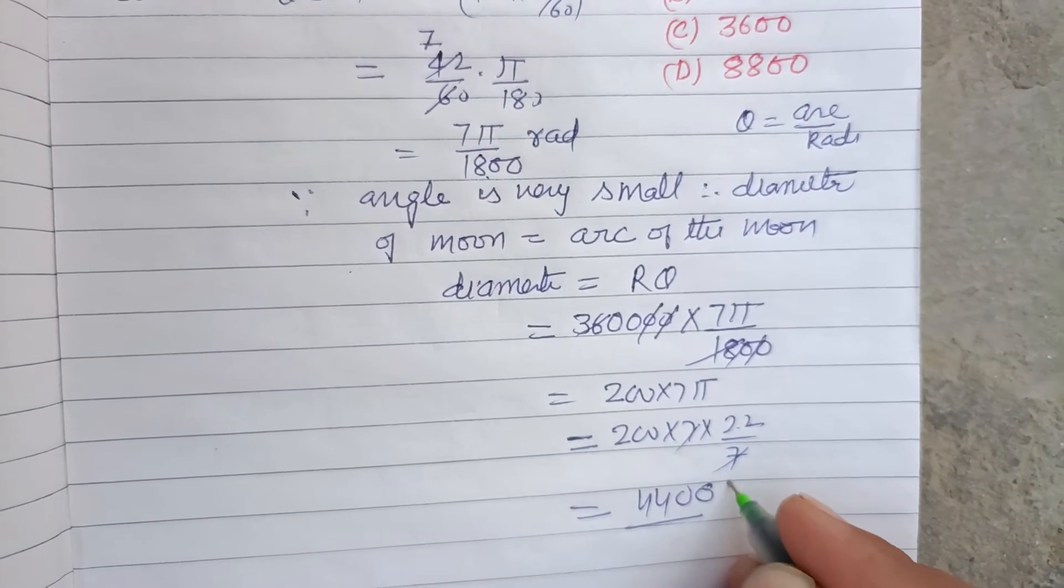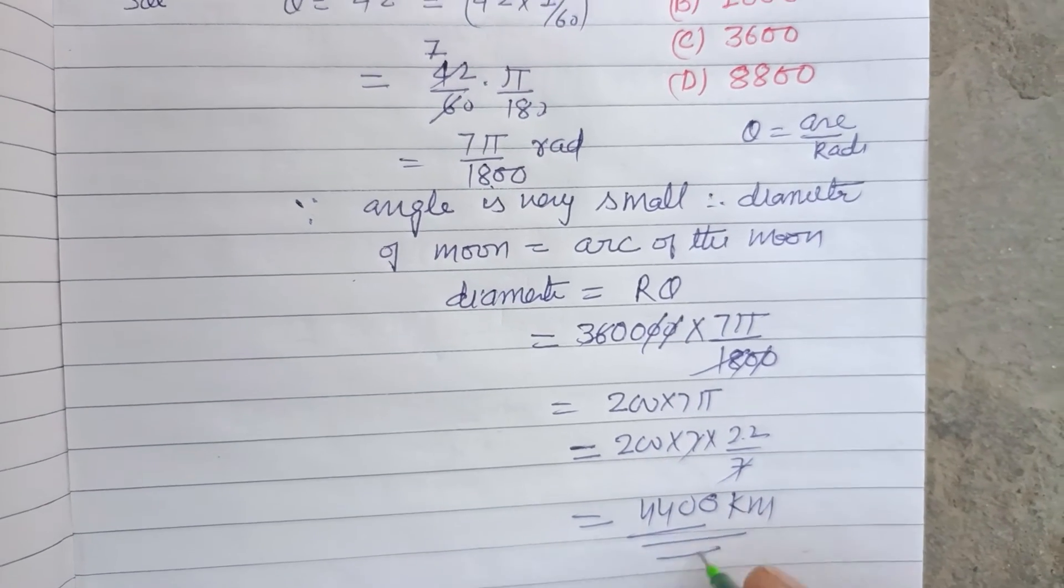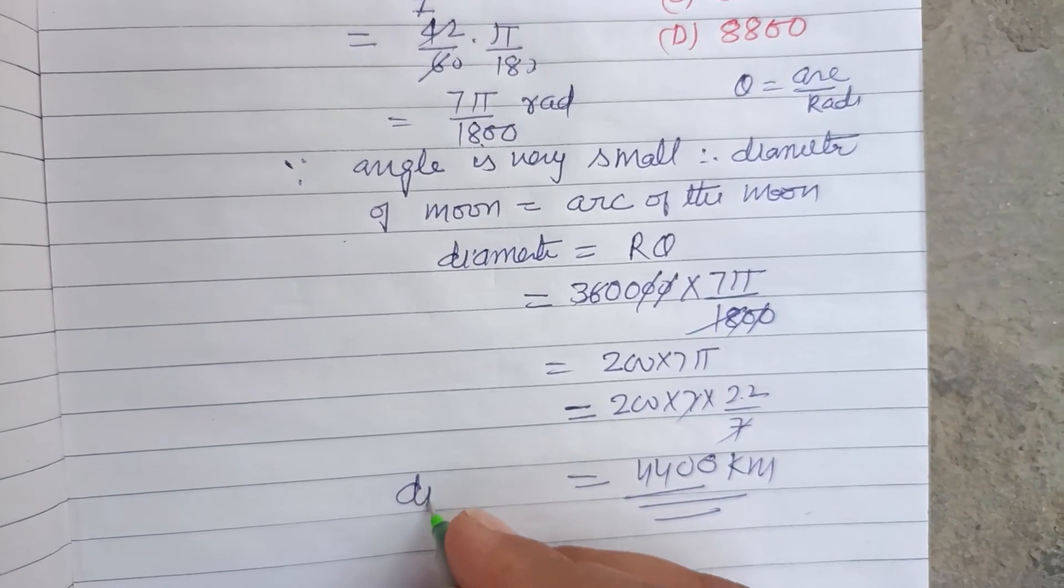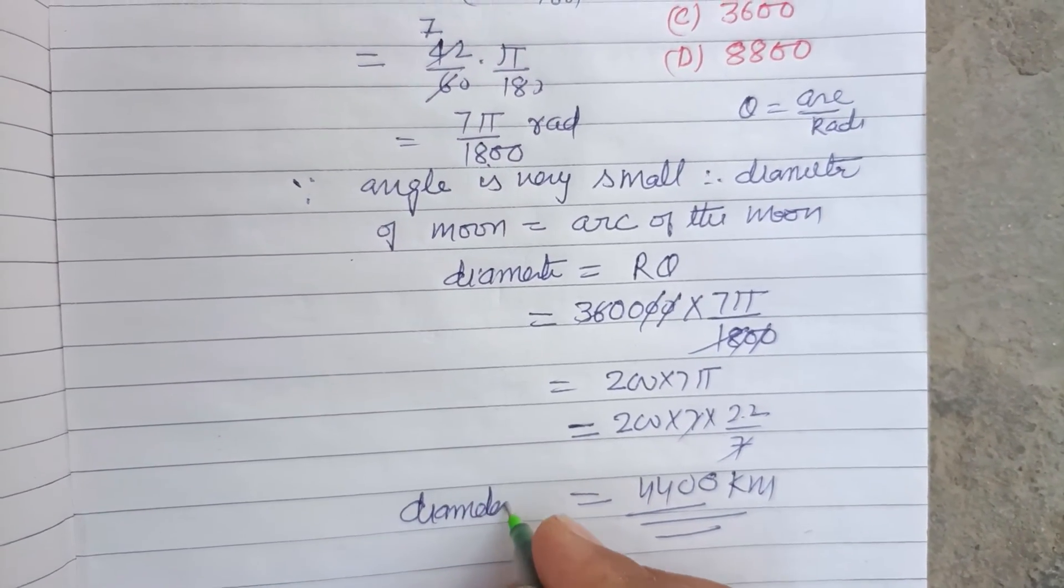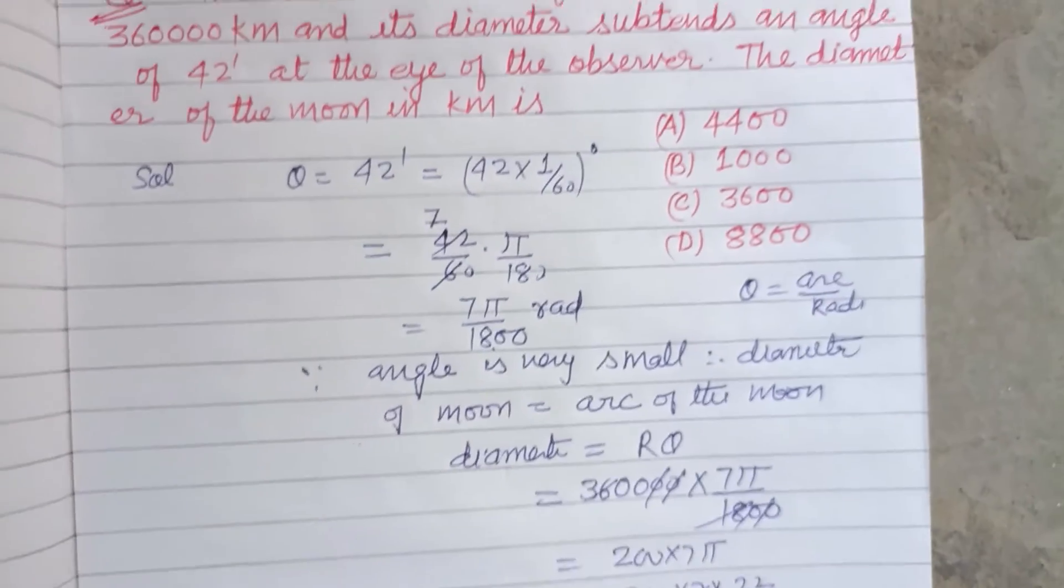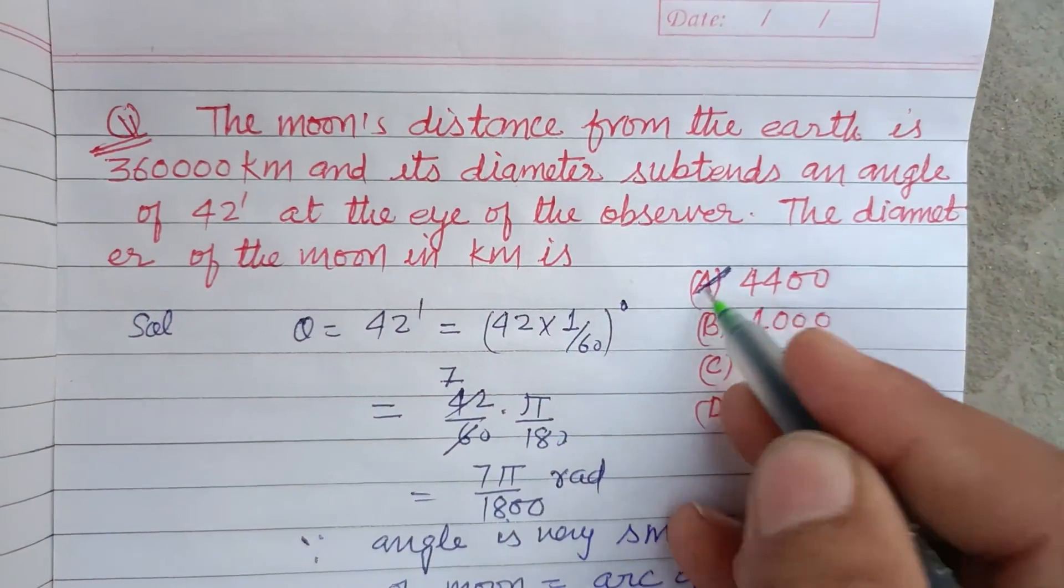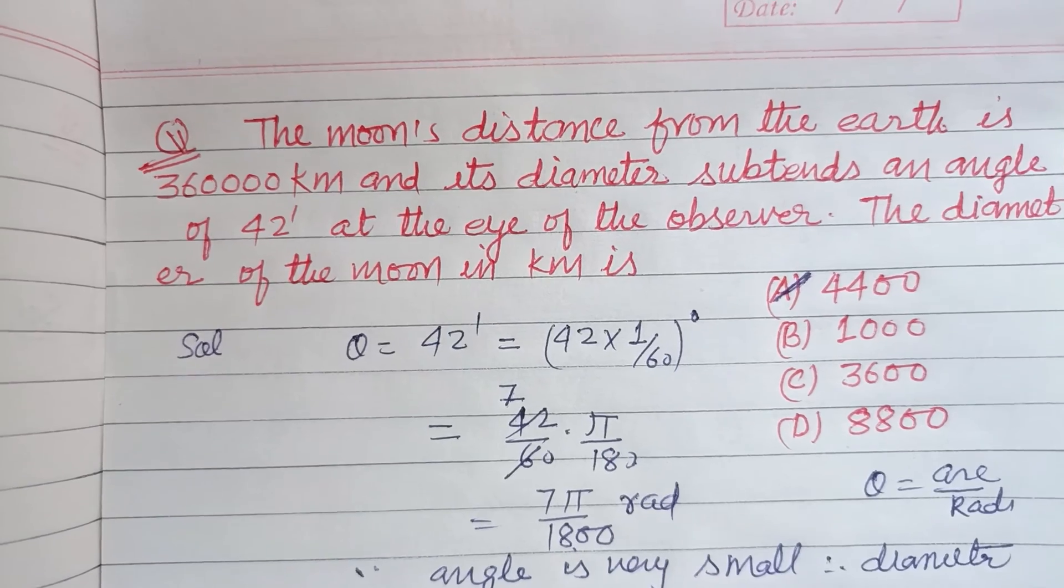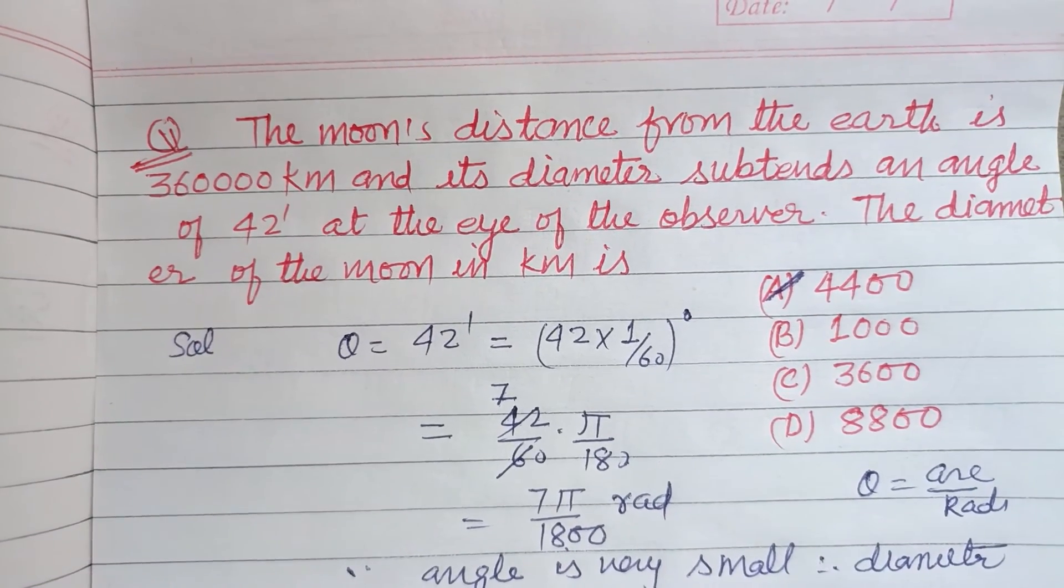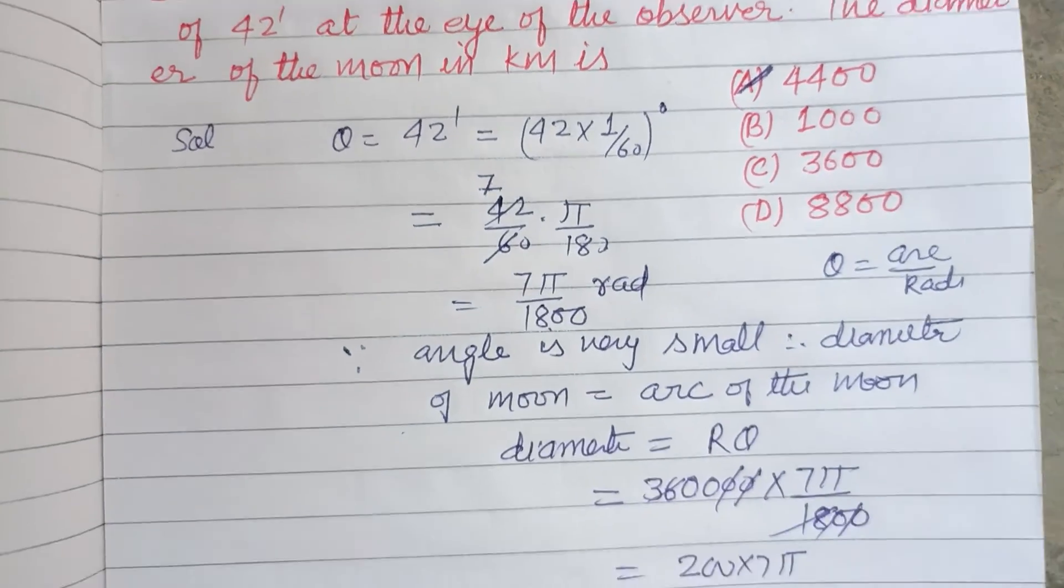So 4400 kilometers is the diameter of the moon, and so the answer to this question is A. A is the correct answer. I hope you got it. Please like the video, subscribe to the channel, thanks for watching.